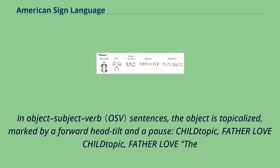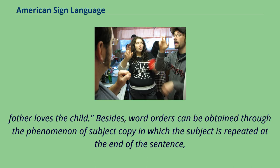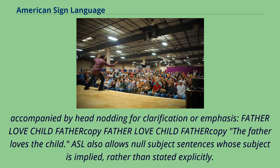In object-subject-verb sentences, the object is topicalized, marked by a forward head tilt and a pause. Besides, additional word orders can be obtained through the phenomenon of subject copy, in which the subject is repeated at the end of the sentence, accompanied by head nodding for clarification or emphasis.